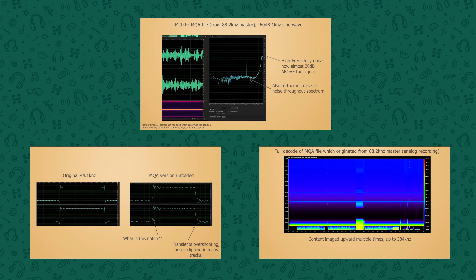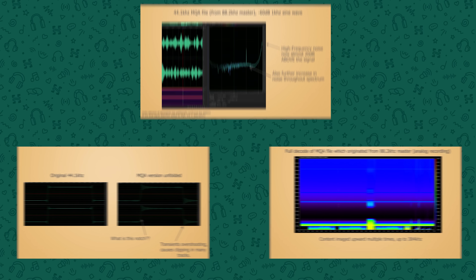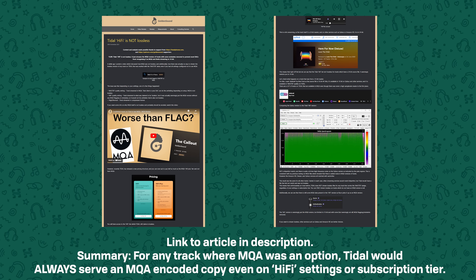Most importantly, there were various ways in which it demonstrably degraded the quality of the audio. You were paying for a solution to a problem that didn't really exist for 99% of people anyway, and it didn't actually solve that problem in the first place. This was a problem because on Tidal there was no way to avoid MQA for many tracks — in fact Tidal for a huge portion of its catalogue simply did not have lossless copies available, and if you were on the hi-fi tier or had chosen not to use MQA in settings, you may not have even been aware you were still being served an MQA encoded file.